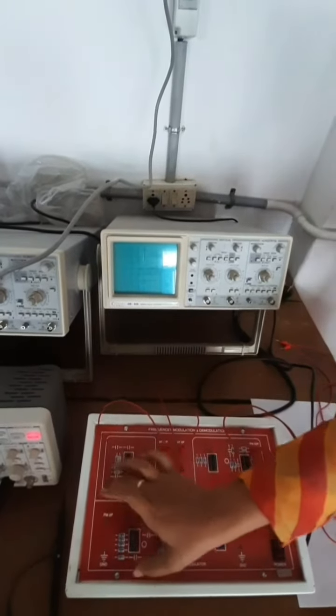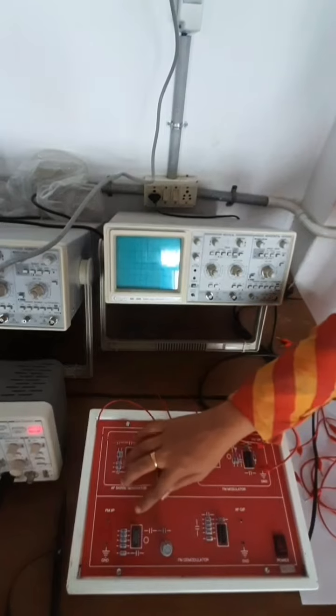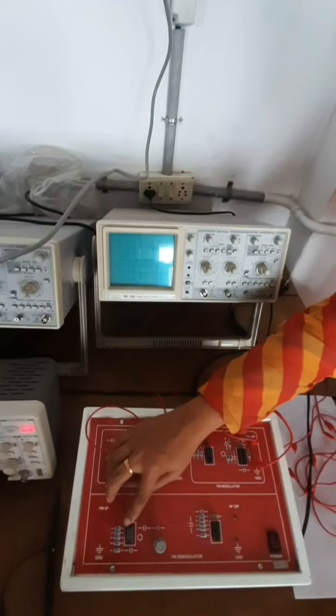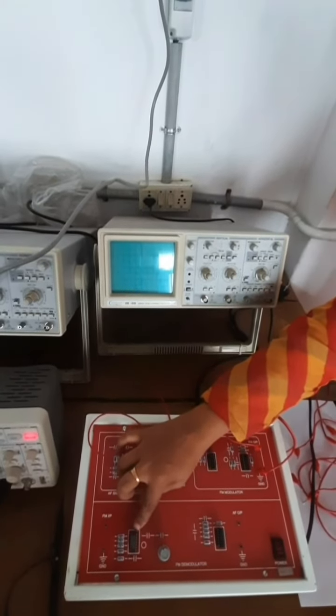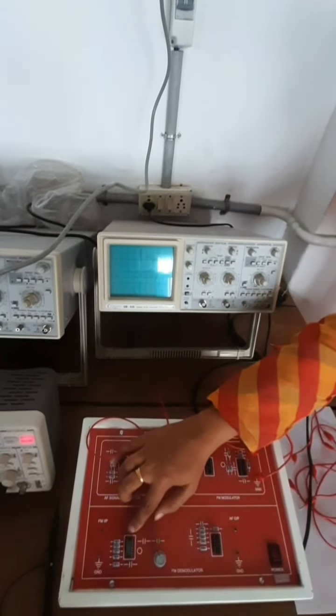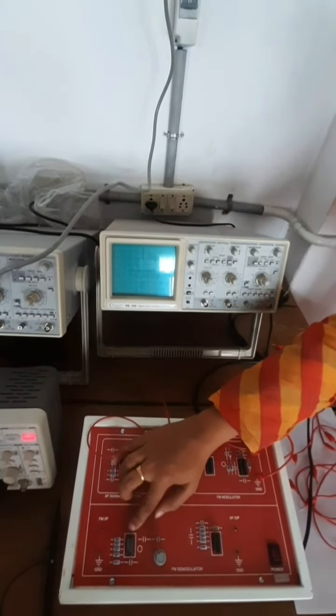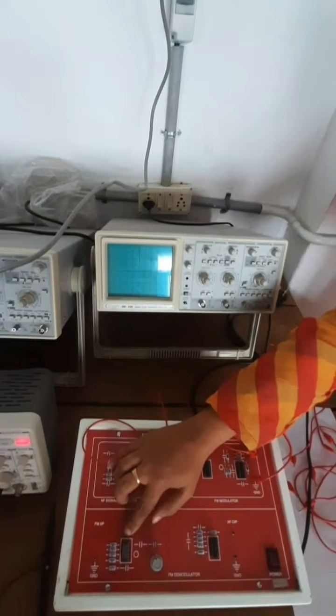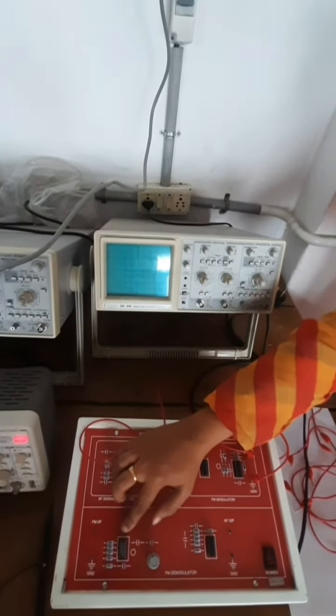This is the block diagram of FM demodulator which consists of two ICs. One is LM565CN IC, which is a phase-locked loop FM demodulator consisting of two components: VCO (voltage-controlled oscillator) used for lowering the distortion, and phase detector which is used to provide good carrier suppression.